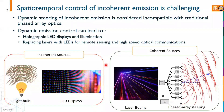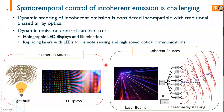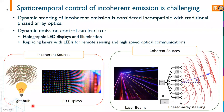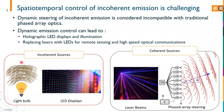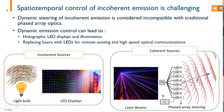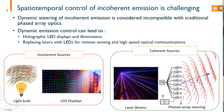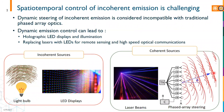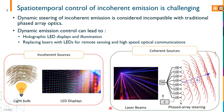Spatio-temporal control of incoherent emission is challenging. Typical incoherent emission sources like light bulbs or LED displays emit over a wide angular field of view and with randomized wavefront. This makes it incompatible with classic phased array steering, which has been developed for laser sources.